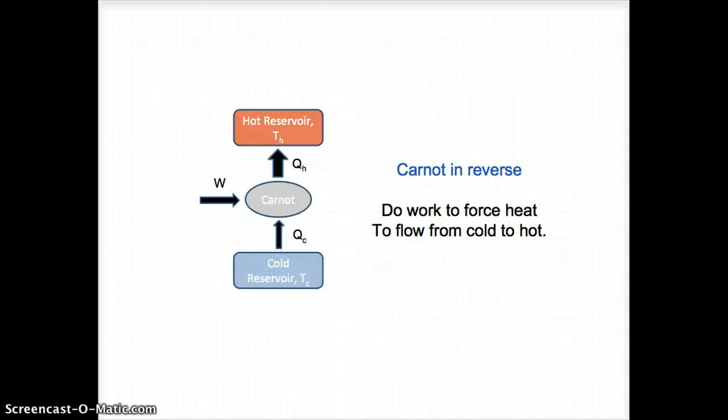Before we do that, one small step first. We have to understand that we can run a Carnot engine in reverse. The Carnot heat engine is a reversible heat engine, which means that we can essentially change the direction of every arrow in our diagram and get something that is still possible in nature. So a normal Carnot engine run forward takes heat from the hot reservoir, sends it to the cold reservoir, and in the process, outputs some work.